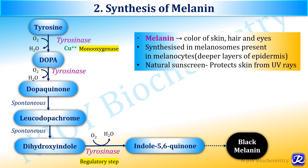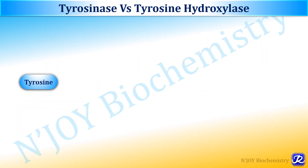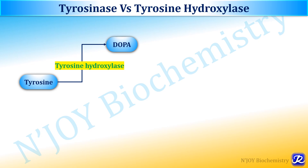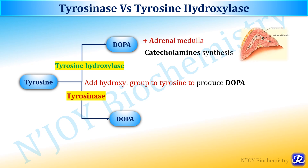There is another pathway from DOPA quinone: cysteine condenses with dopamine to form dopachrome, which is responsible for synthesis of red melanin. Both tyrosinase and tyrosine hydroxylase lead to formation of DOPA from tyrosine. By the action of tyrosine hydroxylase, DOPA is formed in the adrenal medulla responsible for catecholamine synthesis, while by the action of tyrosinase, DOPA is formed and is involved in synthesis of melanin in the melanoblast.